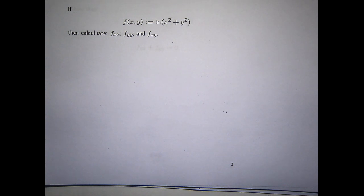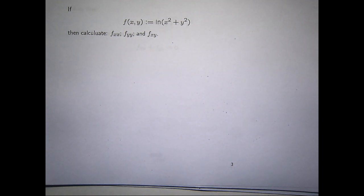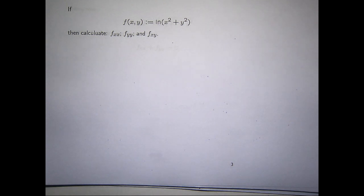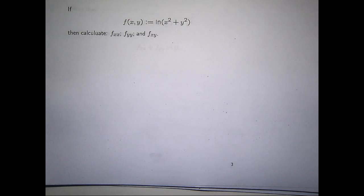By the subscripts, f sub xx means d squared f dx squared with the curly d's. By 'ln' I mean the natural logarithm function.